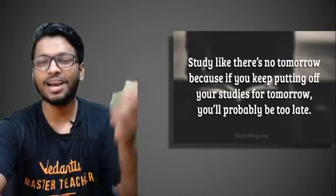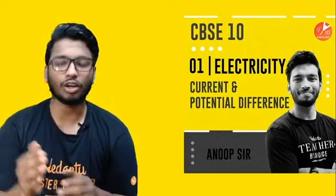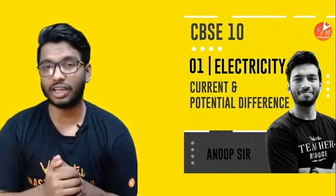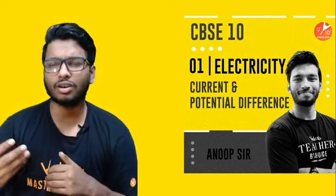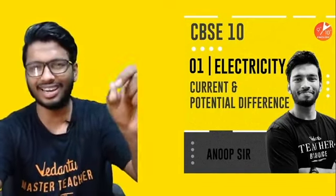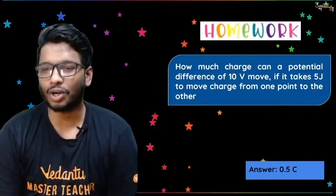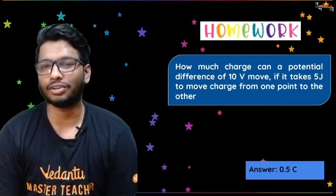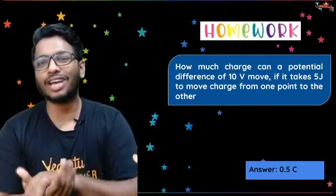With that said, let us get started. In the last session we talked about current and potential difference, so please make sure to go back and watch that video to review the concepts. At the end of that last session I gave you a small piece of homework: how much charge can a potential difference of 10 volts move if it takes 5 joules to move charge from one point to the other? The answer to that question is 0.5 coulombs.